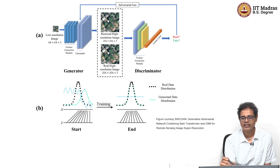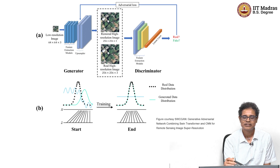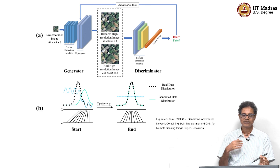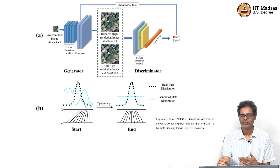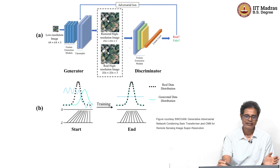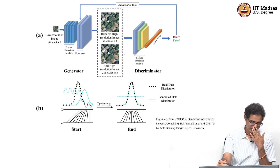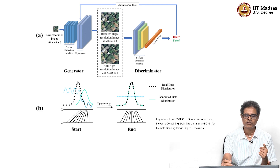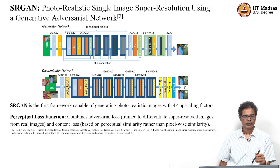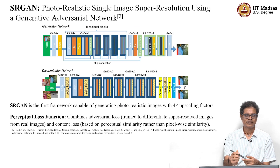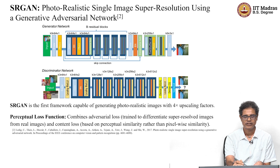The discriminator produces an adversarial loss, which is fed back to update the weights of the generator. They play this two-player game, and at the end, the generator becomes so good that whatever it produces looks like a real image. This paper has two components: the generator network, which takes a low resolution image and produces a super-resolved image, and the discriminator network.